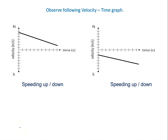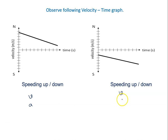Observe the following velocity-time graph. We have to explain which is a speeding up situation and which is a speeding down situation. We will check the direction of velocity and acceleration — if both are the same, then it is speeding up; otherwise it is speeding down.